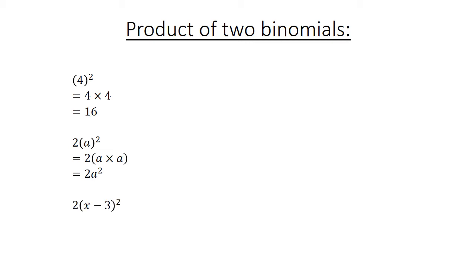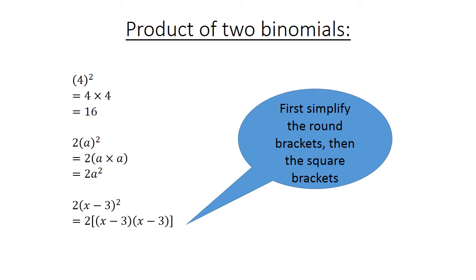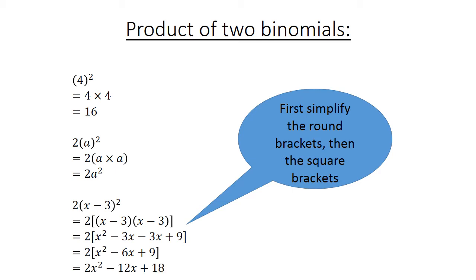2 in brackets: x minus 3, close brackets, to the power of 2. This equals 2 times the square brackets of round brackets x minus 3, times x minus 3, close square brackets. Expanding gives 2 times x squared minus 3x minus 3x plus 9, inside square brackets. Equals 2 in brackets x squared minus 6x plus 9. Now we multiply: 2x squared minus 12x plus 18.